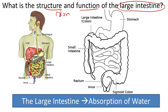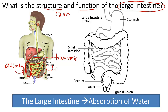The first part of the large intestine is called the ascending colon. The second part is the transverse colon. And the third part is called the descending colon, because it descends into the rectum. And here's the rectum right here.